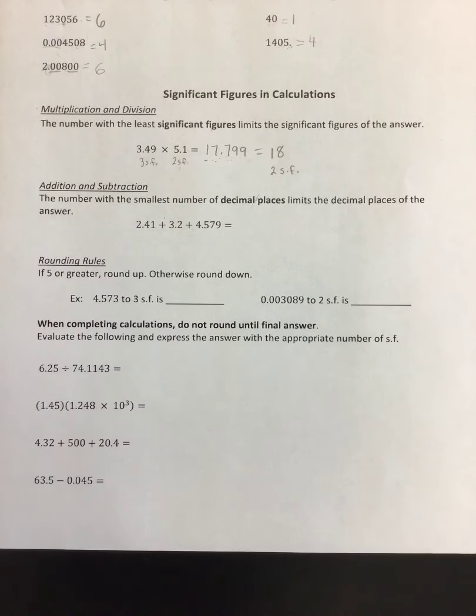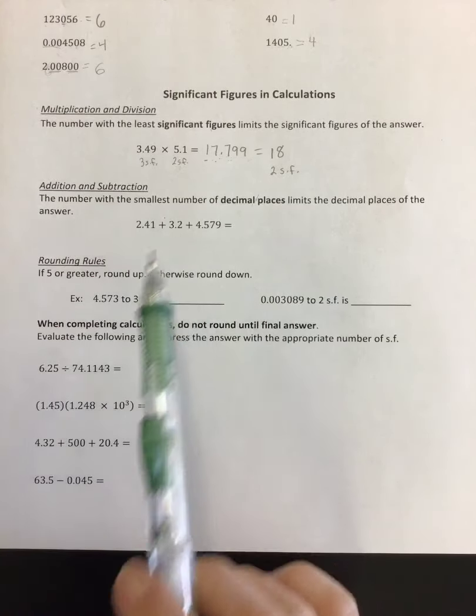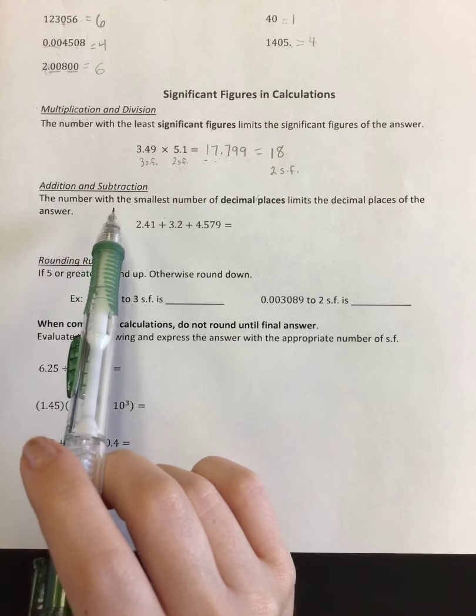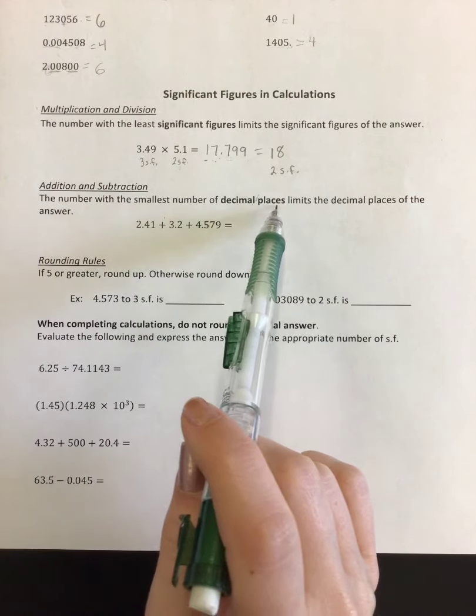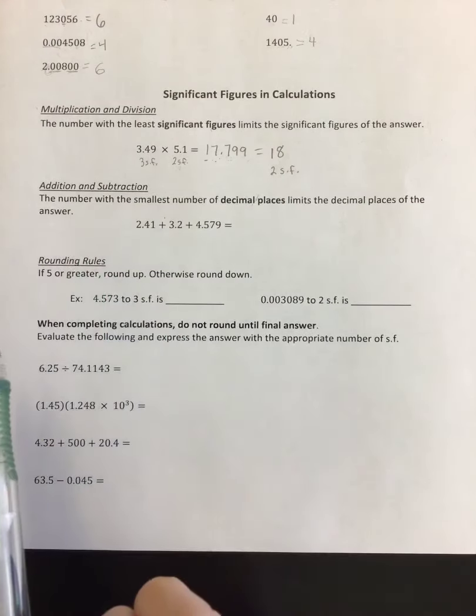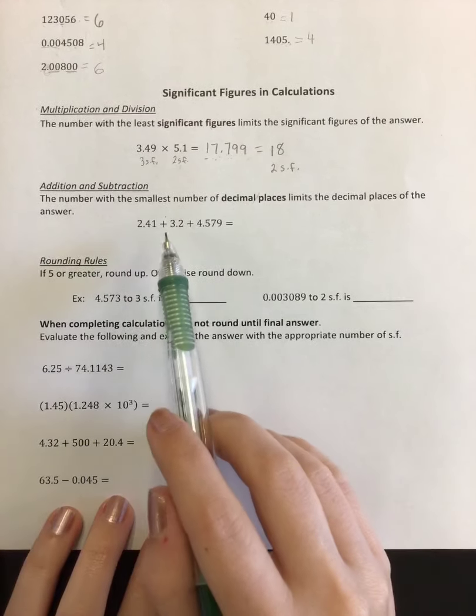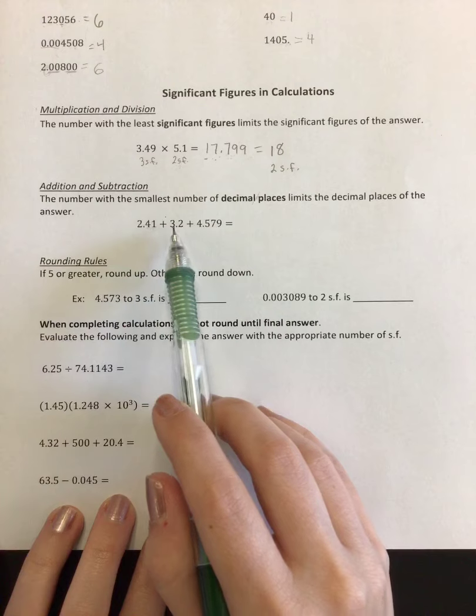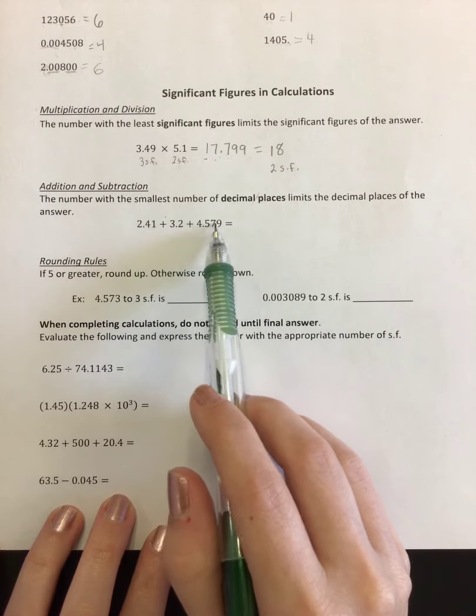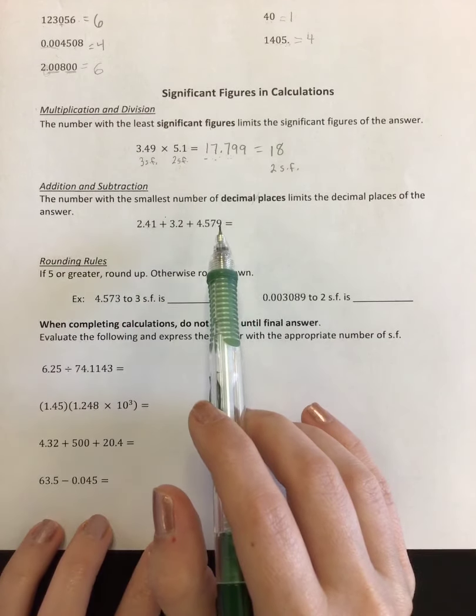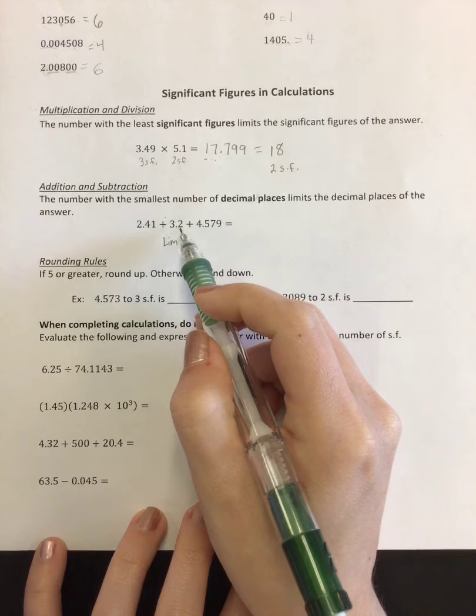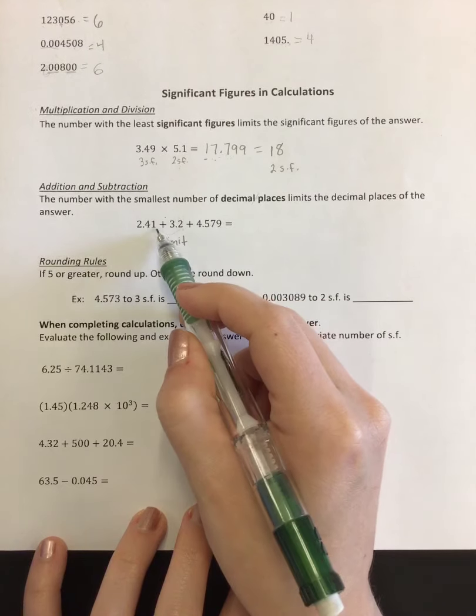Addition and subtraction has a completely different rule. And that's why these are so confusing for people sometimes. It's because they want to automatically look at every calculation and just count sig figs on it. But the thing about adding and subtracting is that it doesn't use sig figs at all. It just says the number with the smallest number of decimal places limits the decimal places of the answer. So if I look at my three things I'm adding here, I have 2.41, which goes two digits past the decimal point. 3.2, which goes one past the decimal point. 4.579, which goes three past the decimal point. Therefore, one of these numbers, this one, is going to limit us because it goes the least digits past that decimal point.